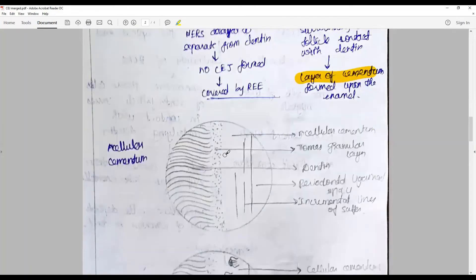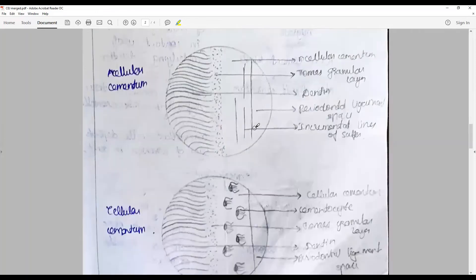This is cellular enamel. Note the cemento sides, the process of which are directed towards the outside PDL with spider-like projections.